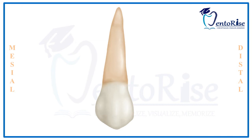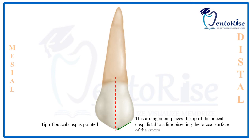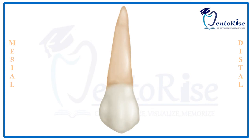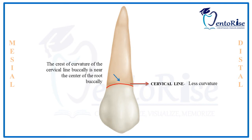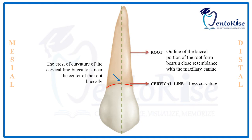The tip of the buccal cusp is pointed, and this tip is positioned distal to the line bisecting the buccal surface of the crown. Regarding the root, the cervical line of the permanent maxillary first premolar has less curvature; however, the crest of curvature of this cervical line buccally is near the center of the root. The outline of the buccal portion of the root bears a close resemblance with that of the maxillary canine, and the apex of the root is pointed.